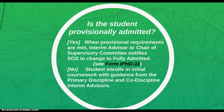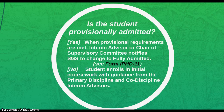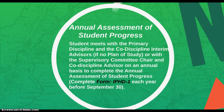If a student is provisionally admitted to the program, once the provisional requirements are met, the interim advisor or the chair of the student's supervisory committee needs to submit IPHD 11 to the School of Graduate Studies for the status of the student to change from provisional to full admission. If a student is fully admitted to the program initially, then they will be ready to enroll in courses and complete their plan of study within the first two years of the program.